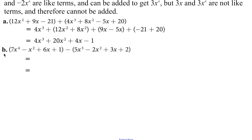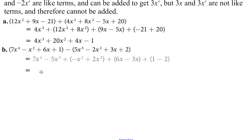Letter B — same kind of process. We don't have anything to combine with 7x to the 4th or 5x to the 3rd. The thing to be careful of when we're subtracting: this subtraction sign right here means you're going to change every sign inside this parenthesis. It's like multiplying by negative 1 and adding. So when we have a minus x squared and then a minus 2x squared, this one actually becomes a plus 2x squared, so we're going to get a positive x squared. Make sure that you're watching and checking those signs. So here is our final answer on that.